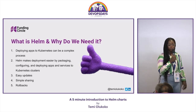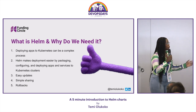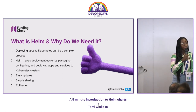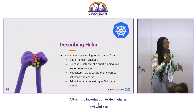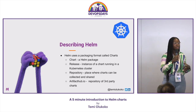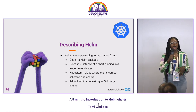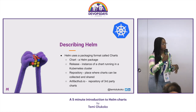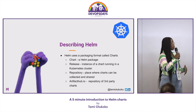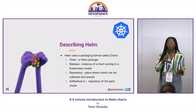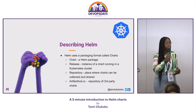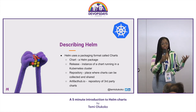Let's take a closer look at Helm. Helm uses a packaging format called Charts. Charts are essentially a group of files that describe Kubernetes resources. These Charts can be used to deploy something simple, like a memcache pod, or something more complex, like a full-stack web application that has HTTP servers, databases, caches, et cetera.